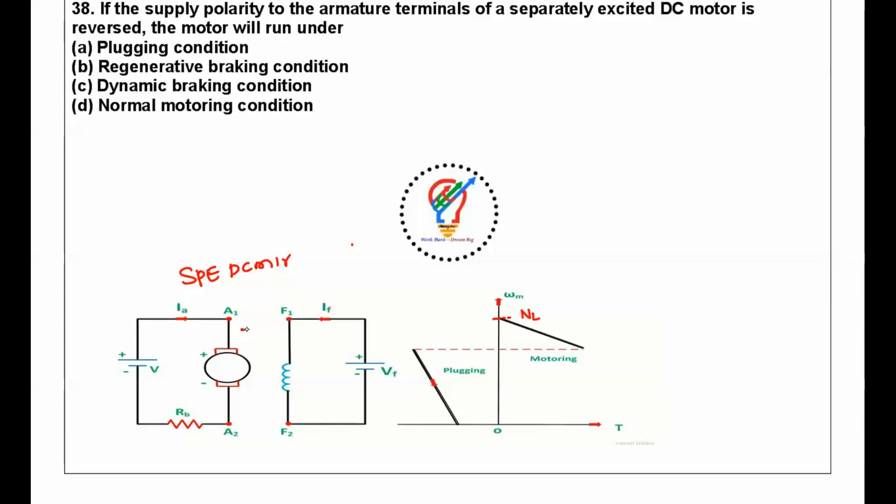Suddenly we are reversing the armature terminals. Earlier it was plus minus, now it is minus plus. This time what will happen is the motor enters from motoring mode to plugging mode, and the answer is the plugging condition.